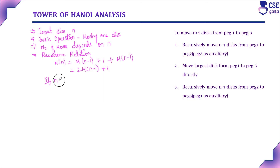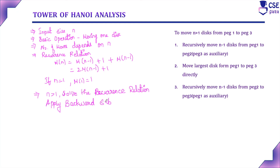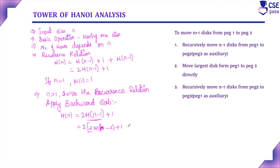Initially, consider N value equal to 1. Substituting N=1, we get M(1) = 1. For N greater than 1, we will solve the recurrence relation by backward substitution. M(N) = 2·M(N-1) + 1. Applying backward substitution for M(N-1): substitute 2·M(N-2) + 1, giving us 2²·M(N-2) + 2 + 1.